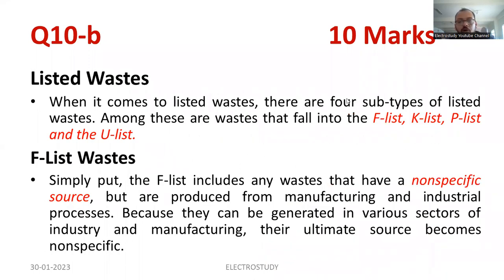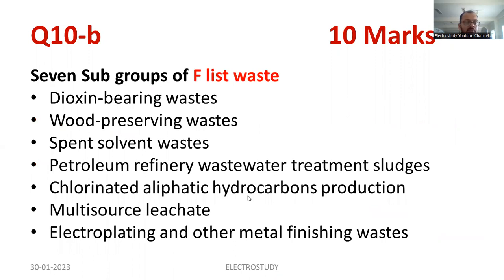Listed waste — you have to mention the source of listed waste and its classification. It is divided into sub-classifications: F list, K list, P list, etc. F list is basically a non-specific type of source — it originates from manufacturing units. You have to mention the seven sub-groups of F list waste: dioxin-bearing waste, wood-preserving waste, spent solvent waste, petroleum refinery wastewater, and so on. You can prepare the sub-classification if necessary. K list waste is also very important. Unlike F list waste, which is non-specific, K list waste is specific waste. The main sources include sludges and wastewater. There are 13 industries which generate K list waste, for example: iron and steel production, petroleum refining, explosive manufacturing, ink formulation, and veterinary pharmaceuticals manufacturing — at least five to six you can mention.